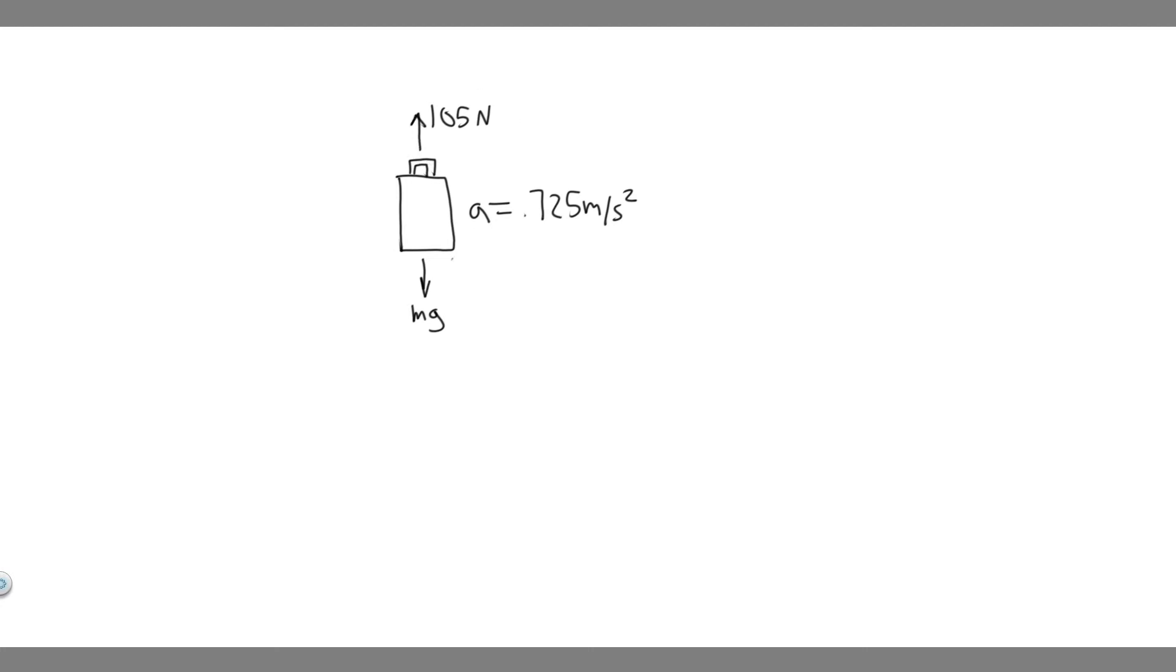And so this force that we have to add is mg, and this is basically called the weight force because any object has a force acting on it, which is going to be the force due to gravity. On Earth we have gravity, so this is the force as a result of that, which we call the weight force, and it's just equal to the mass of an object times g, which is gravity.